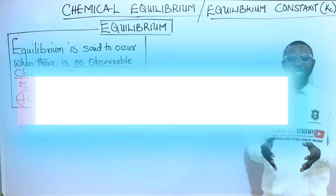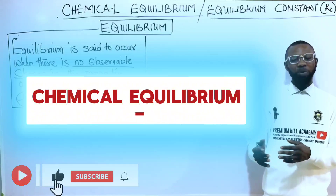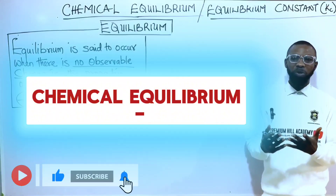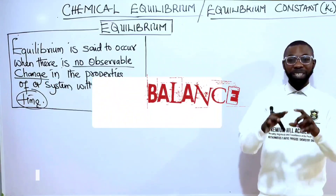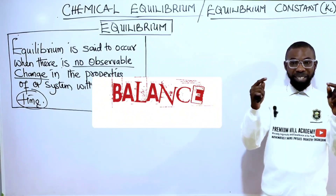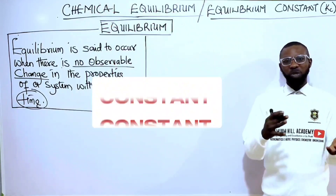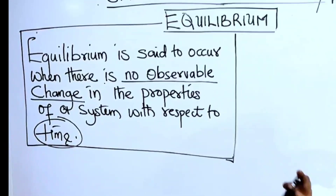Welcome back guys. Today we will be looking at chemical equilibrium and equilibrium constant. What does the word chemical equilibrium really mean? In the layman's sense, the word equilibrium means balanced or constant when there is no change in something. So equilibrium occurs when there are no observable changes in the property of a system with respect to time.